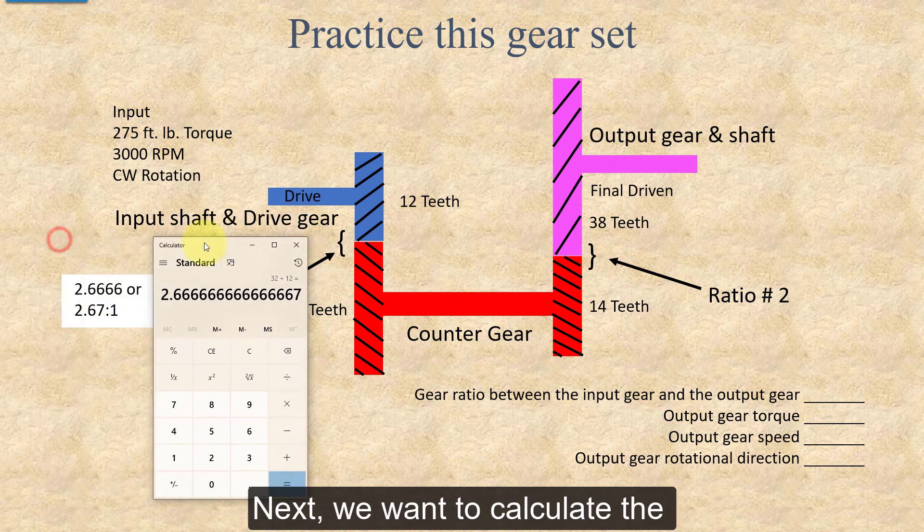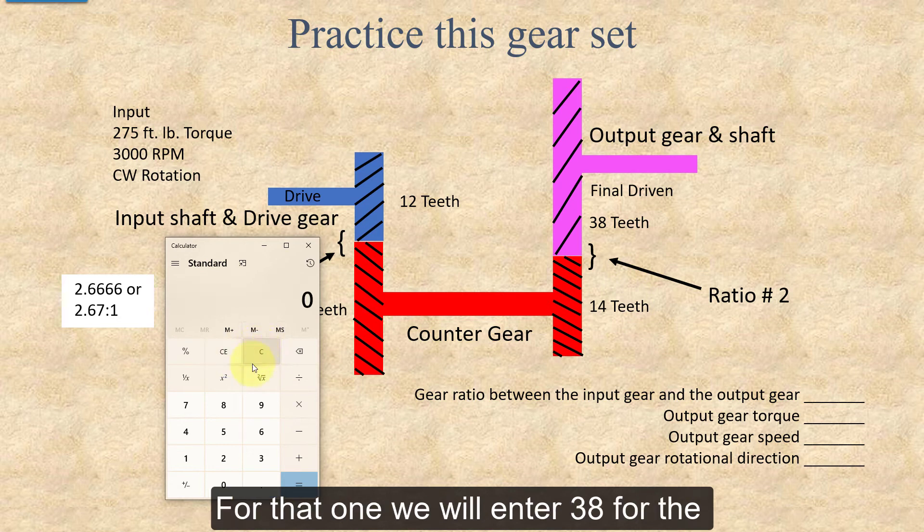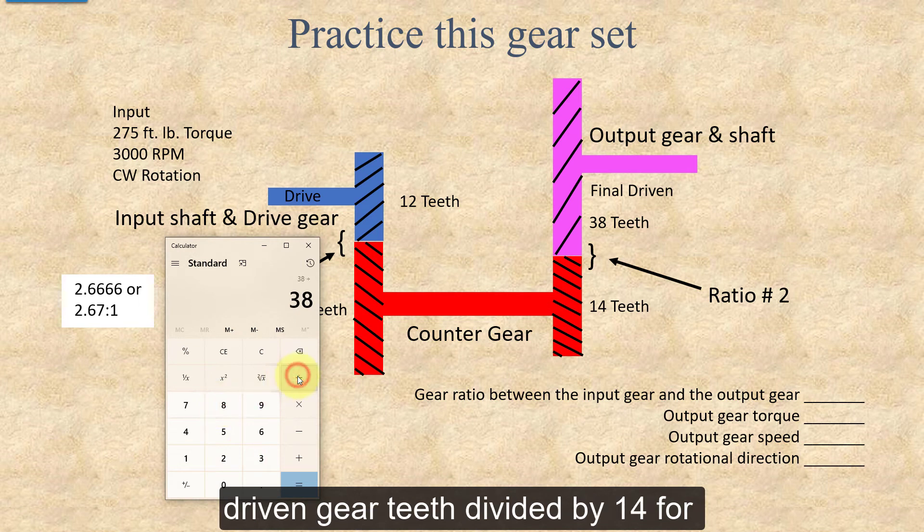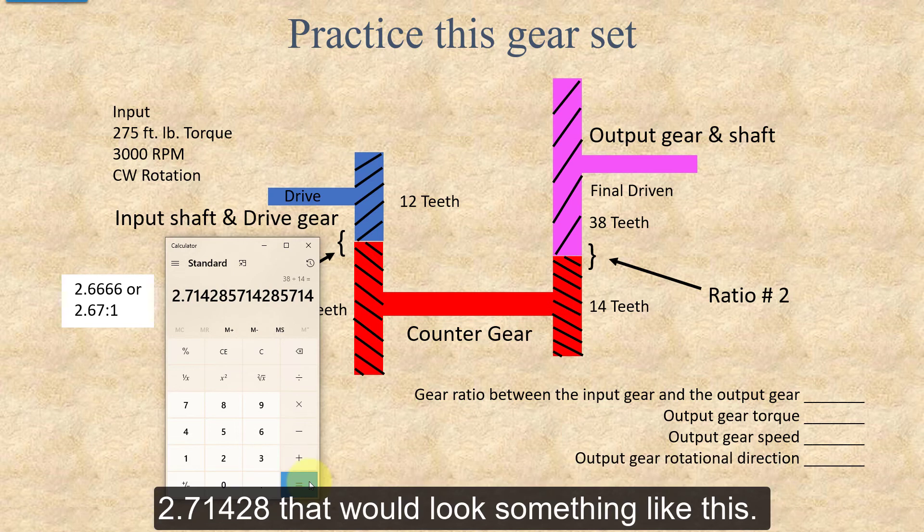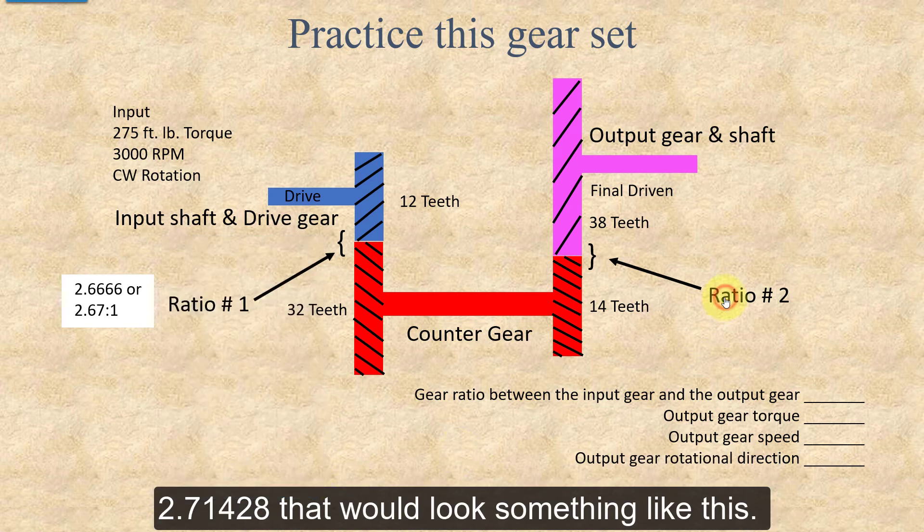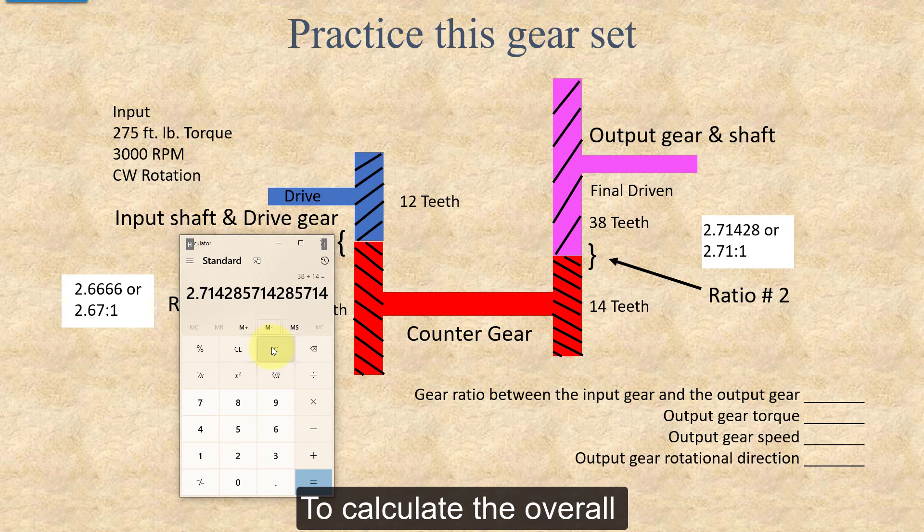Next, we want to calculate the gear ratio for ratio number 2 over on the right on the driven output side. For that one, we will enter 38 for the driven gear teeth divided by 14 for the counter drive gear. That also gives me a calculation that needs to be rounded, 2.71428. That would look something like this. Now that has to be rounded to 2.71.